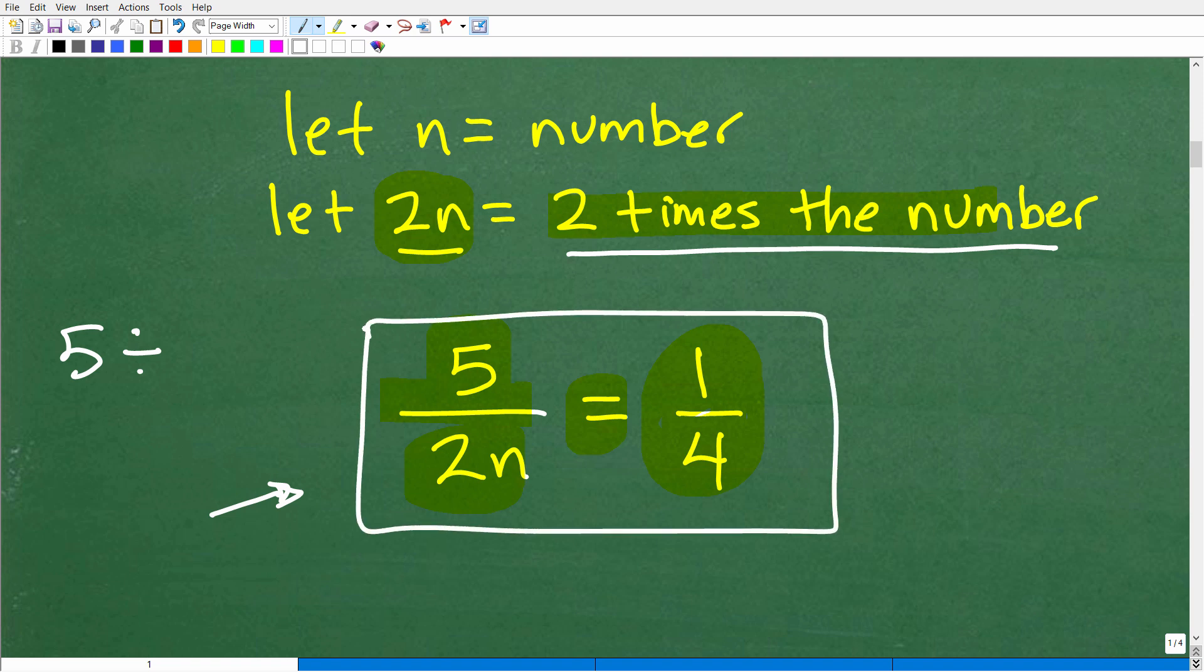So this is kind of the first two steps. So the first step, obviously, I have to read the prompt, is to define some variables, and then we need to construct an equation. Now, the last remaining step is to be able to solve this equation. So let's go ahead and take a look at this right now.